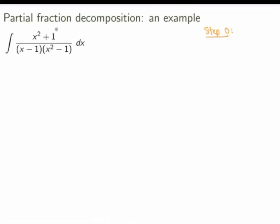What 'proper' means is that the degree of the numerator is less than the degree of the denominator. If it's not proper, then you'll want to use long division to rewrite it as a sum of a polynomial and a proper rational function. But here the degree of the numerator is 2 while the degree of the denominator is 3, so it is proper. So we can use partial fraction decomposition right away.